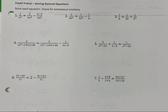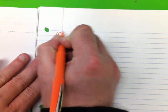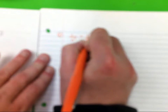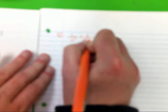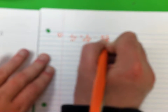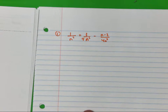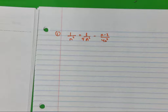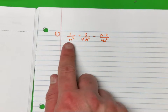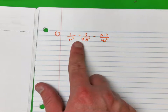We're going to look at number one to begin with. Number one is: one over n squared equals three over four n squared minus two over four n squared. We did these in algebra two last year. Remember, this is a rational equation because you have terms that are in the form of a fraction.